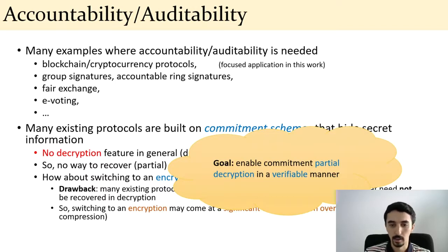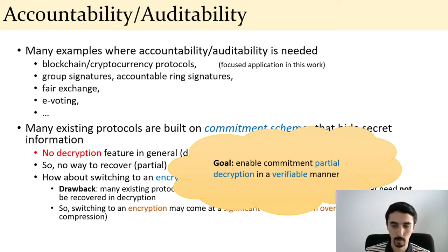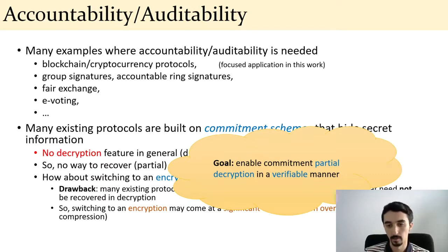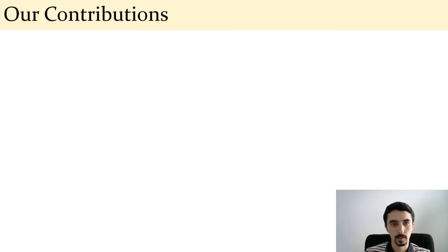This is precisely the problem we are trying to solve. Our goal is to enable partial decryption in a verifiable manner — partially decrypting a commitment scheme rather than switching to full encryption. Verifiable here is similar to verifiable encryption: users cannot simply avoid decryption because we ask them to prove that the commitments are well formed, and the decryptors will always be able to decrypt a verifiably committed message.